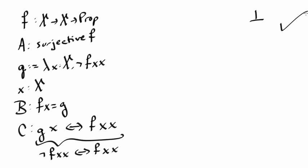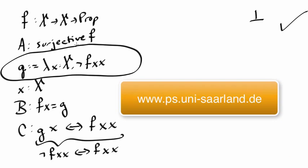So clearly the important part of this proof was the appropriate choice of g. In particular choosing it to be this anti-diagonal function lambda x, not f x x.